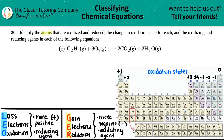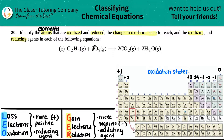Number 20: identify the atoms that are oxidized and reduced. We need to know the change in the oxidation state for each, then find the oxidizing and the reducing agents in each of the following equations. We have letter C, so we need to find out which atoms — whether carbon, hydrogen, or oxygen — is being oxidized or reduced.